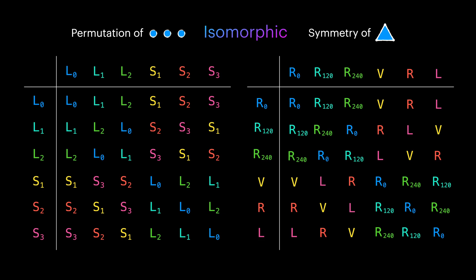Isomorphic groups have the same structure and behave the same. So whatever we find in one is also true for the other one.